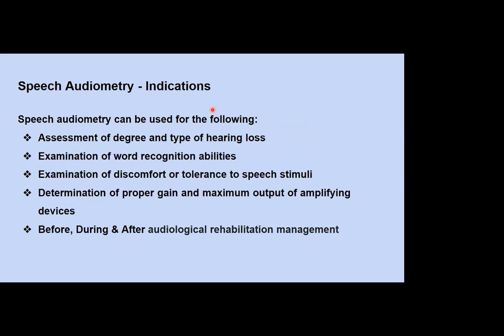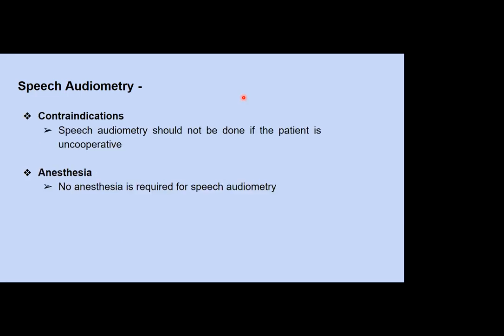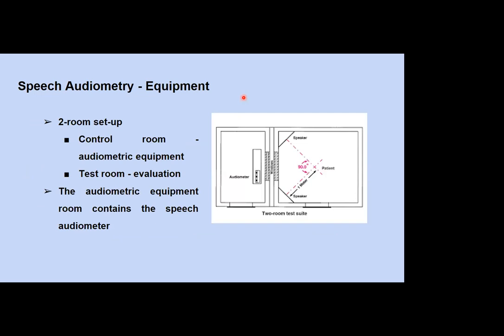Speech audiometry can be used to assess the degree and type of hearing loss, word recognition ability, examination of discomfort or tolerance to speech stimuli, determination of proper gain and maximum power output for amplifying devices, and to assess the process of audiological rehabilitation before, during, and after management. It should not be done if the patient is not cooperative. No anesthesia is required. The typical setup is a two-room arrangement: the control room contains the speech audiometer, and the patient is placed in the test room.